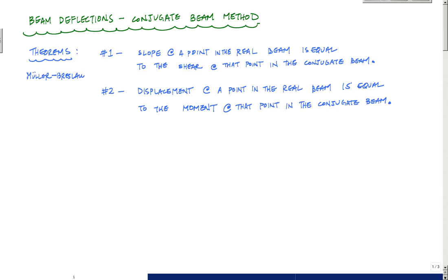We're continuing our structural analysis course, talking about beam deflections using the conjugate beam method. There are two major theorems in the conjugate beam method. The first is that the slope at a point in the real beam is equal to the shear at that point in the conjugate beam.